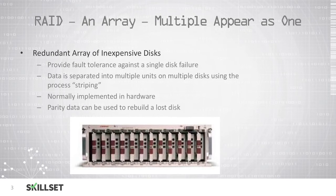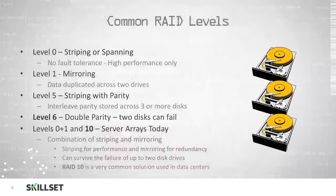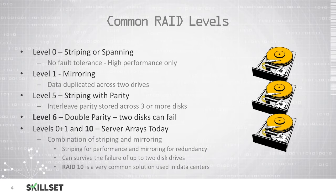So if a disk fails, we can simply install a new disk and then use parity data to rebuild the data that was lost on that bad drive. There are several common RAID levels. RAID level 0 stripes the data across multiple disks but provides no fault tolerance — this is only for high performance.